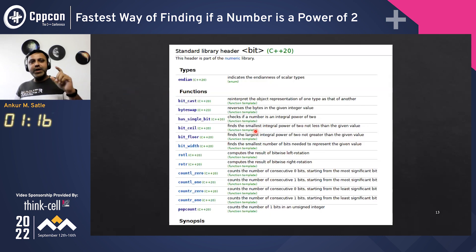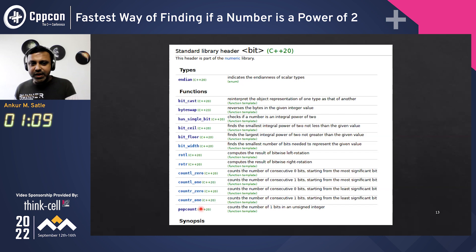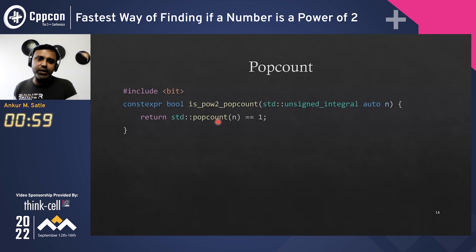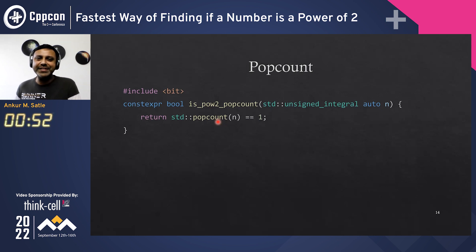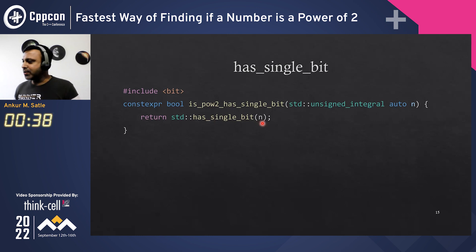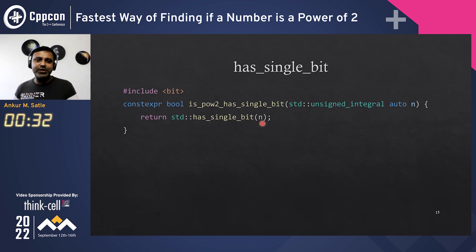In C++20 we have the bit header coming up with these facilities, and some of these are useful to us, like popcount. You could use popcount by including that bit header, and for any unsigned it will give you the count of the number of set bits — you just check that and you know it's a power of two. And not only that, even the matching business can be done by the standard function has_single_bit from the same header. It tells you just yes or no whether there's just a single bit. So that's the answer — just a one-function call.